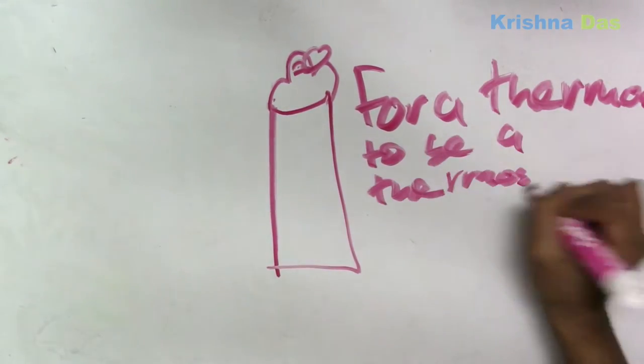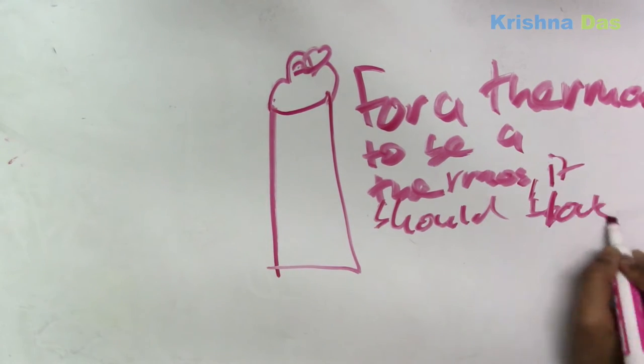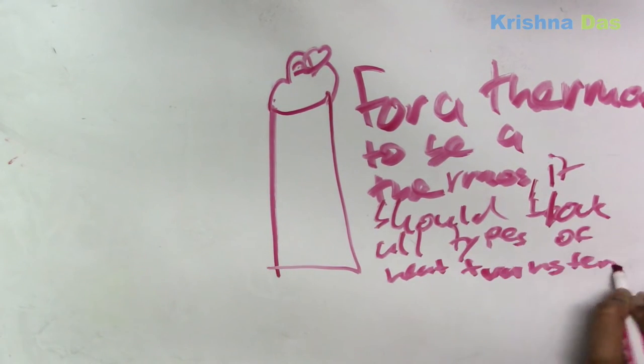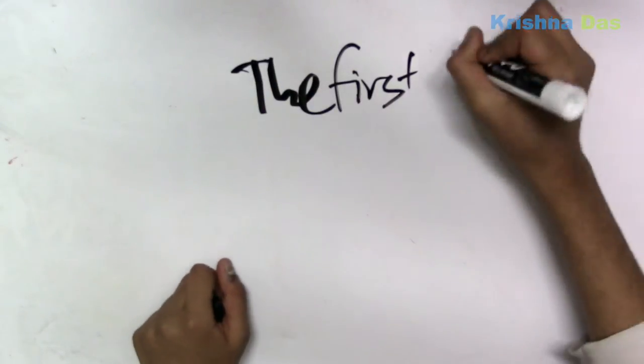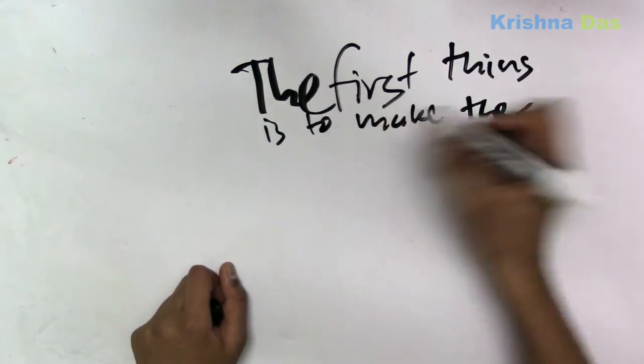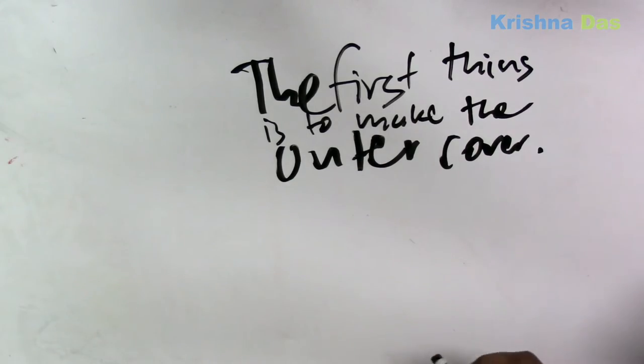So for a thermos to be a thermos, it needs to block any type of heat transfer, all types of heat transfer, particularly well. I may say if you fill the ice cube, it's not going to be perfect. Some heat will come in. That's normal. That's supposed to happen. It's supposed to block most of it.